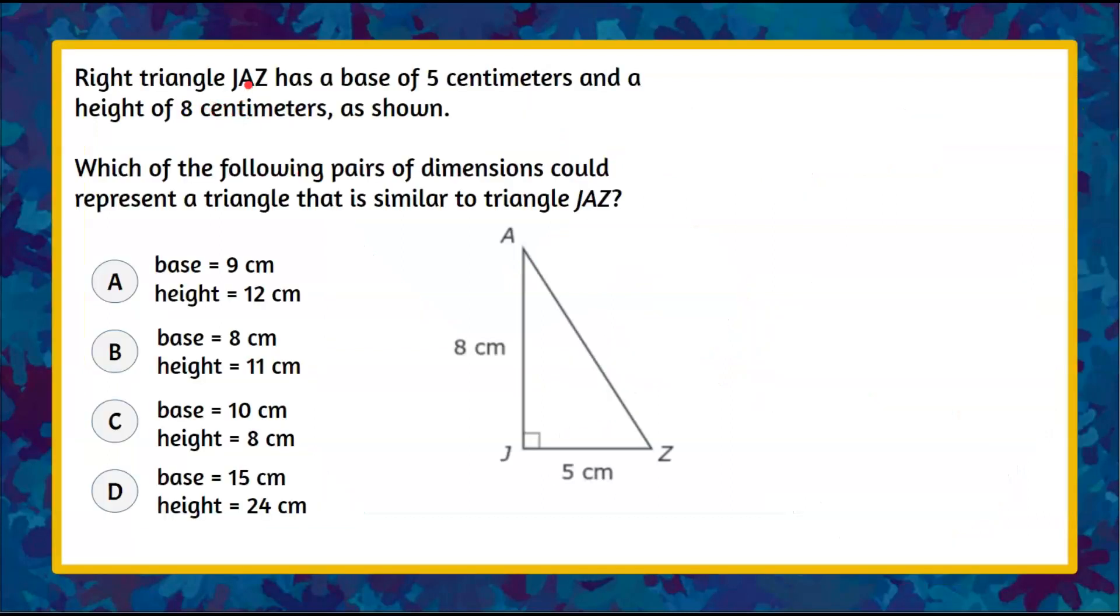Right triangle JAZ has a base of 5 centimeters and a height of 8 centimeters as shown. We're asked which of the following pairs of dimensions could represent a triangle that is similar to triangle JAZ. We're given four pairs of dimensions.